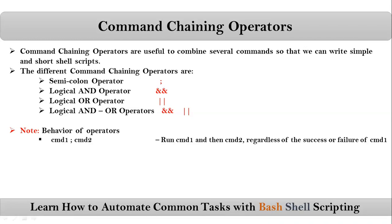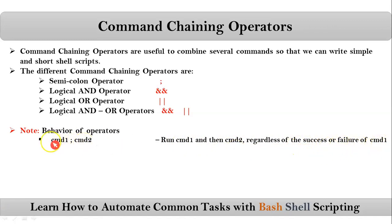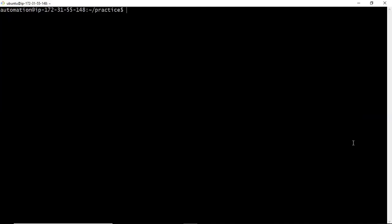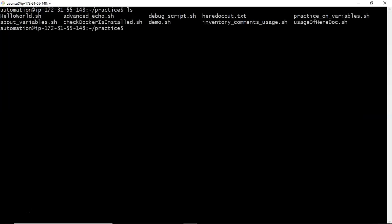First, let me go with the semicolon operator. Suppose I am clubbing two commands using the semicolon operator — it will run command one and then command two regardless of the success or failure of command one. These two commands execute independently. Success or failure of a command means exit status is zero or non-zero. For example, if I run ls, the exit status is zero, meaning the command was executed successfully.